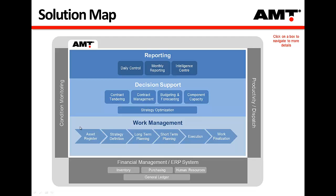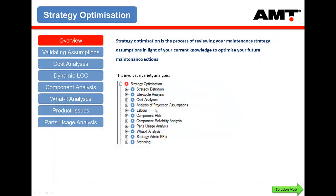That's the work management process. There are a couple of other modules not being deployed at the moment, like AMT Mobile and the CBM module — listed as a phase two. On the decision support side, strategy optimization is the main area. It's a lot of functionality looking at your maintenance strategy from any number of angles.